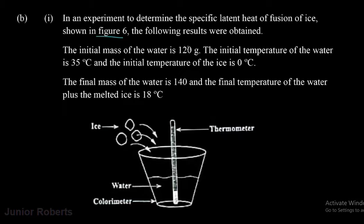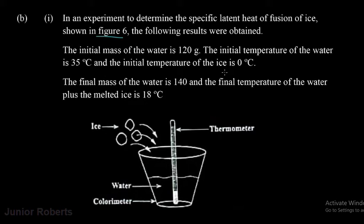We had 120 grams of water at 35 degrees Celsius, and some ice was poured into it. After some time, the ice melted and the mass of the water increased to 140 grams. The temperature of the water went down from 35 degrees Celsius to 18 degrees Celsius, while the temperature of the ice went from 0 up to 18 degrees Celsius.